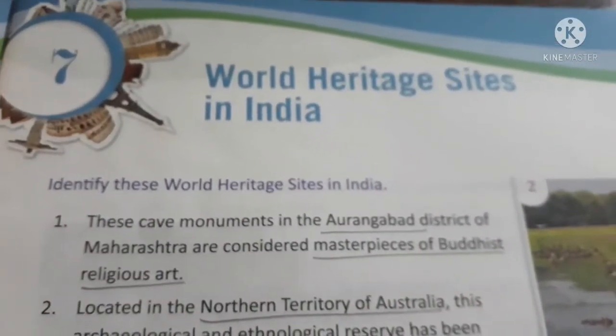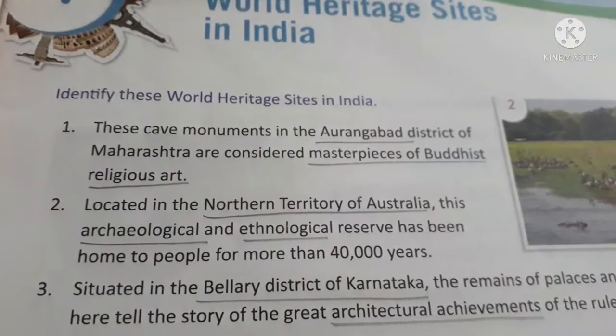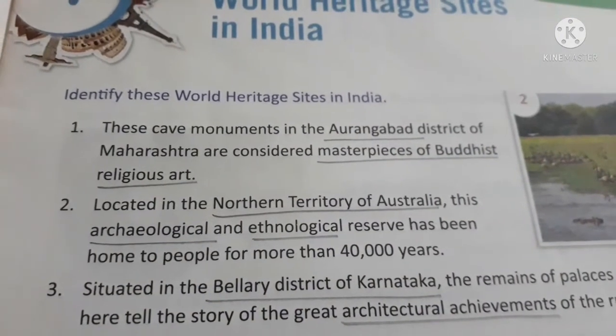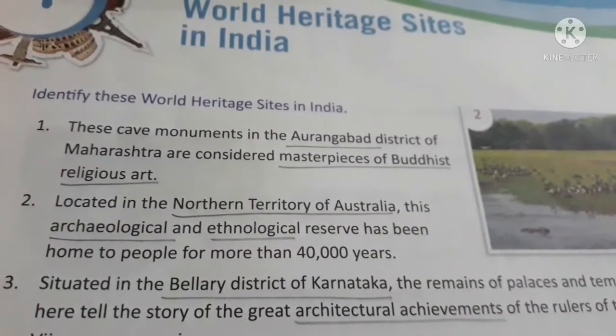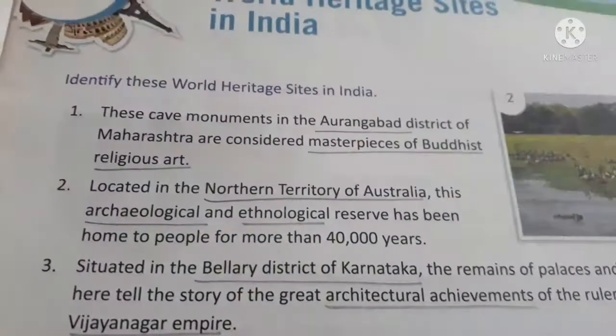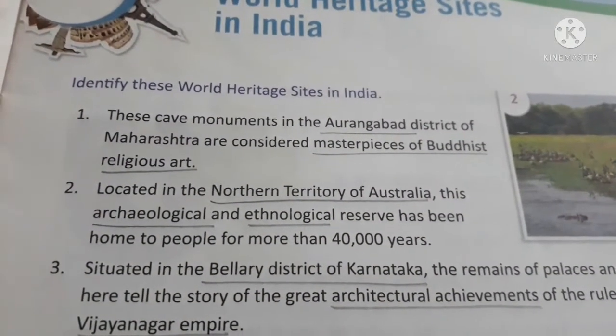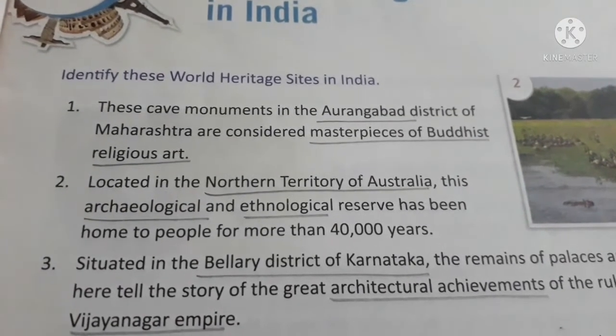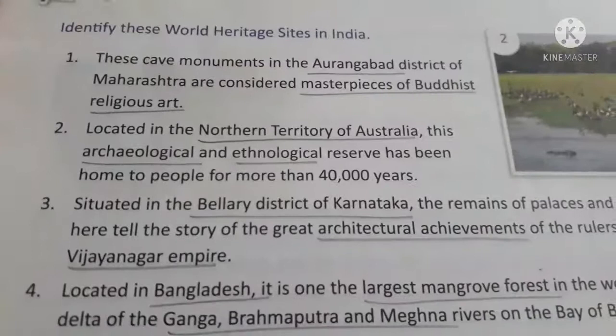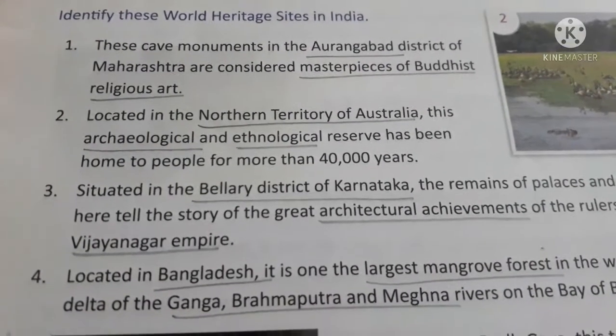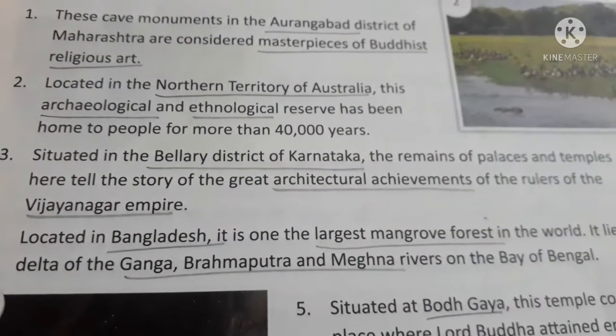Now let us see some World Heritage Sites in India. These cave monuments in the Aurangabad district of Maharashtra are considered masterpieces of Buddhist religious art. Located in the Northern Territory of Australia, this archaeological and ethnological reserve has been home to people for more than 40,000 years. Situated in the Ballari district of Karnataka, the remains of palaces and temples tell the story of the architectural achievements of the Vijayanagar Empire.